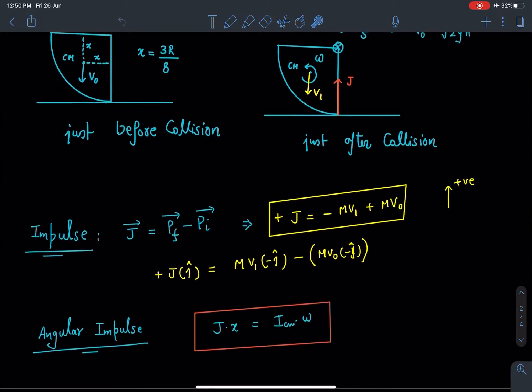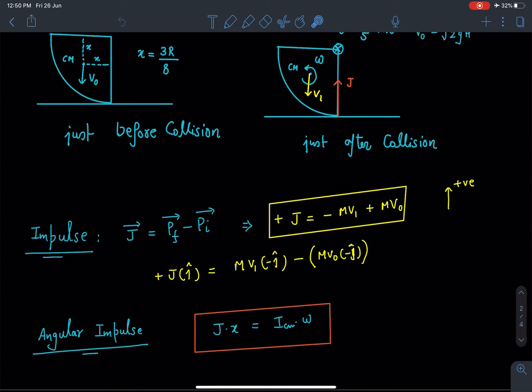Now similarly about center of mass we can write angular impulse equation also which is going to be J×x = Icm×ω where Icm is moment of inertia about an axis which is perpendicular to the plane of the paper and passing through the center of mass.